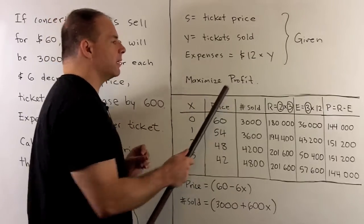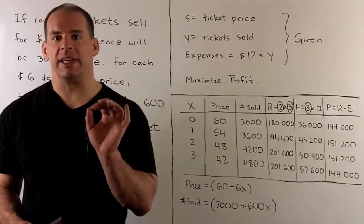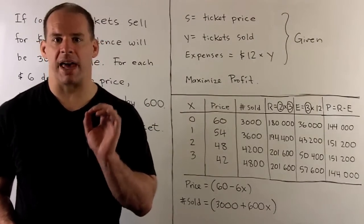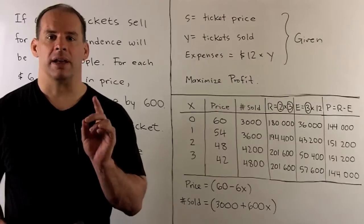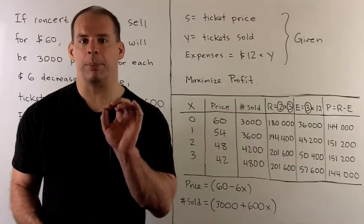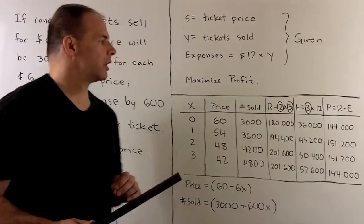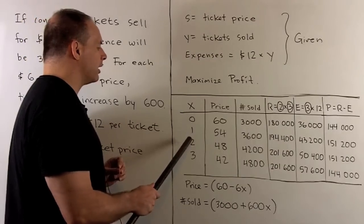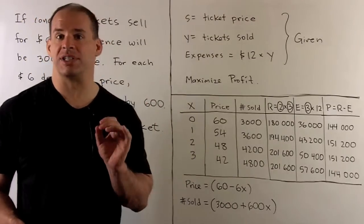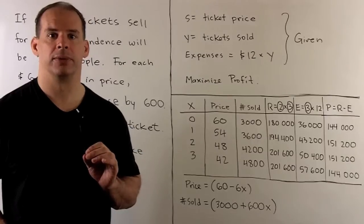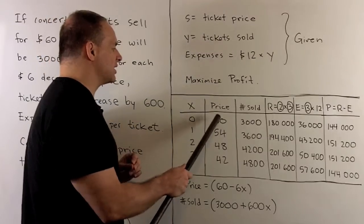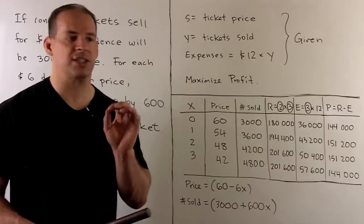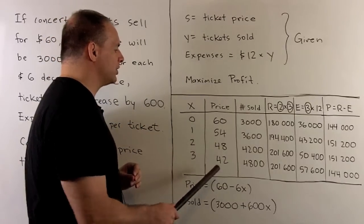Before we do any calculus, let's model a little bit to get an idea of what's happening. Instead of making our variable ticket price, I'm going to make the variable X, which is the increment of $6 that we're decreasing the ticket price by. So X = 0, I have 60. X = 1, I have 54. You just subtract off 6. Then 48, 42, and so on.